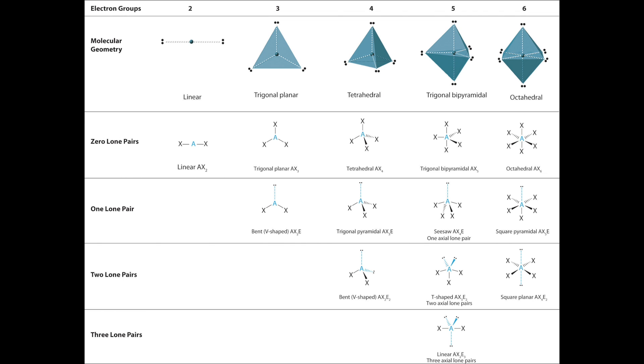Finally, a molecule with six electron groups can have an octahedral, square pyramidal, or square planar molecular geometry, depending on the number of lone pairs. Again, we need to remember to minimize electron-electron repulsion, so lone pairs are placed on opposite sides instead of adjacent ones.